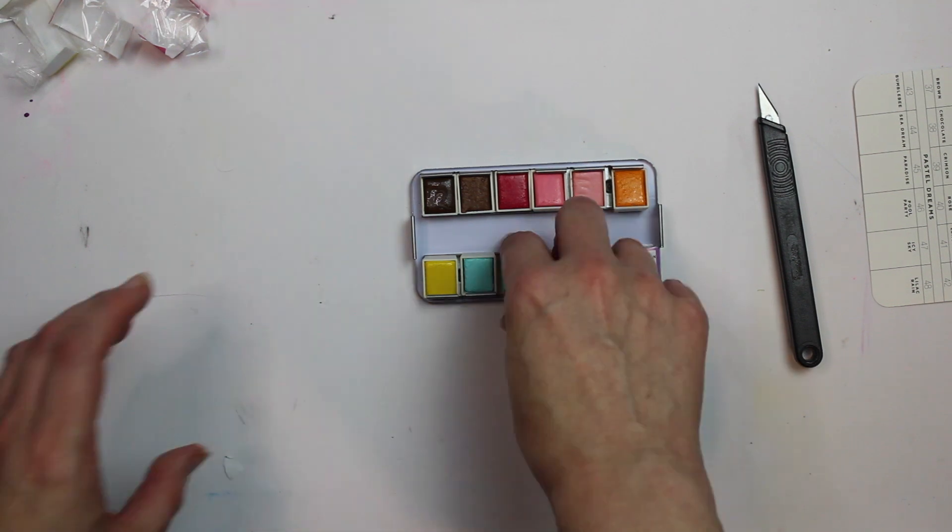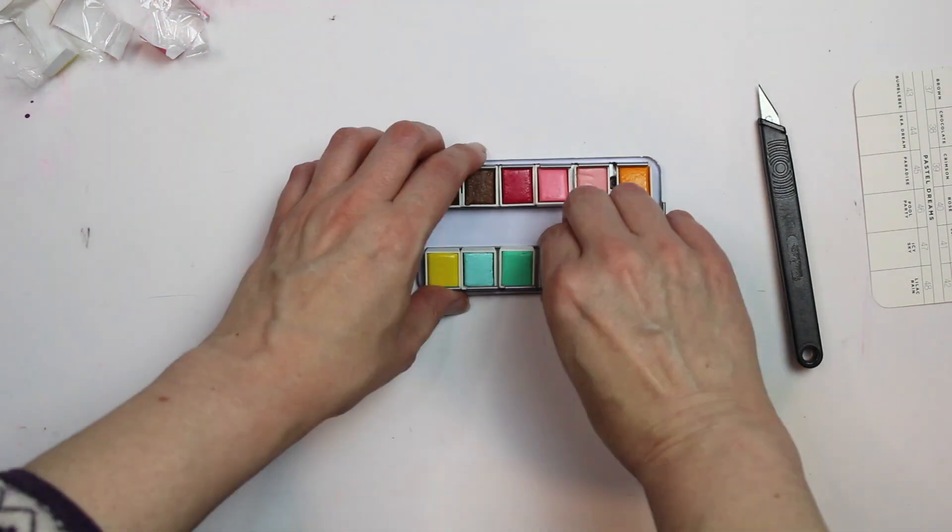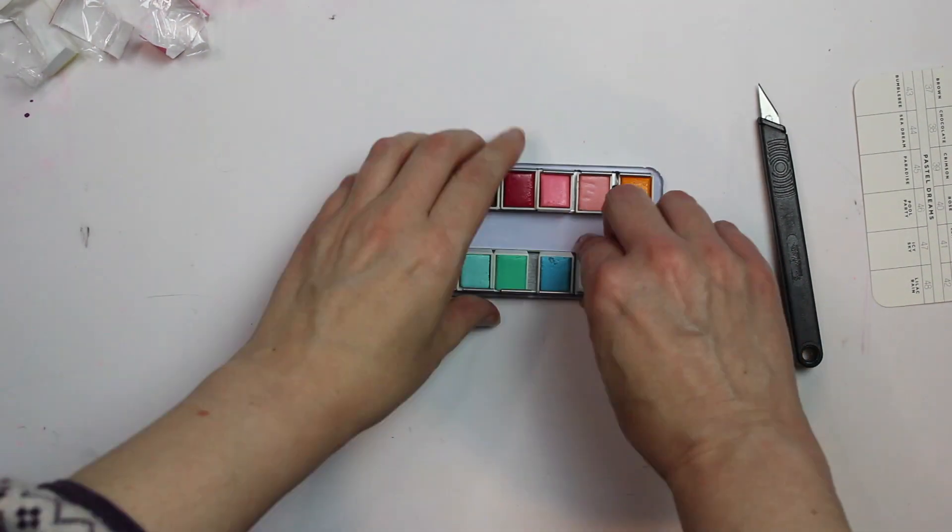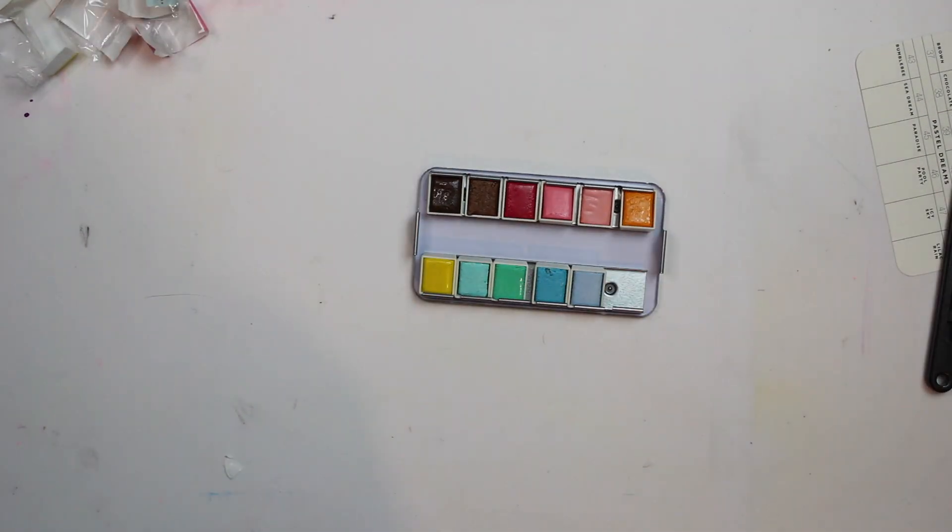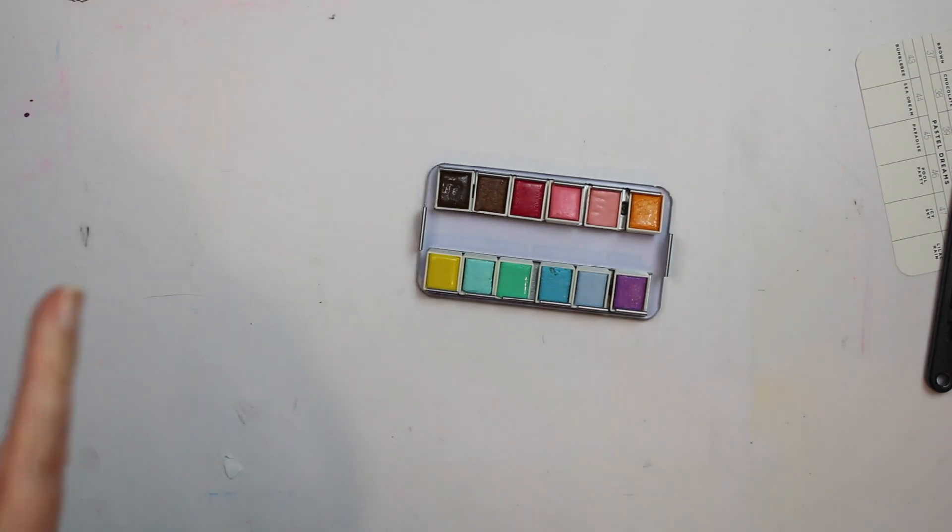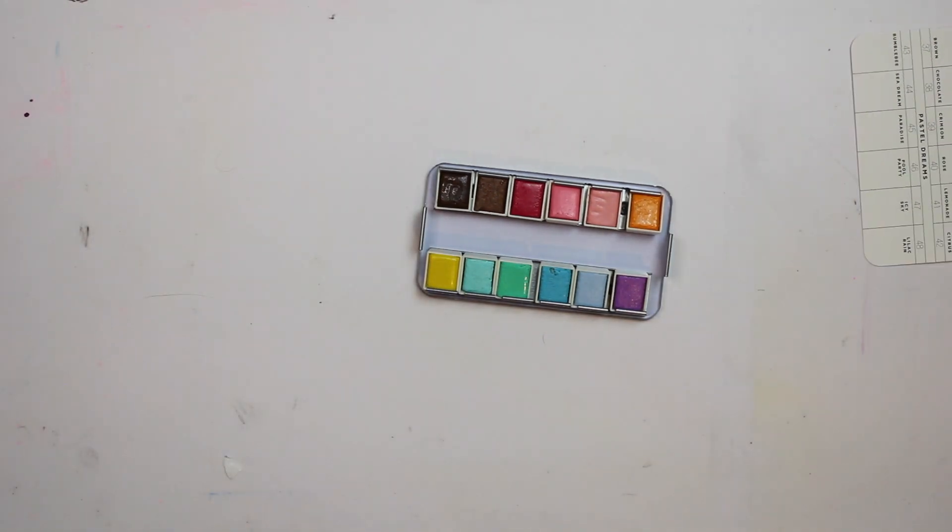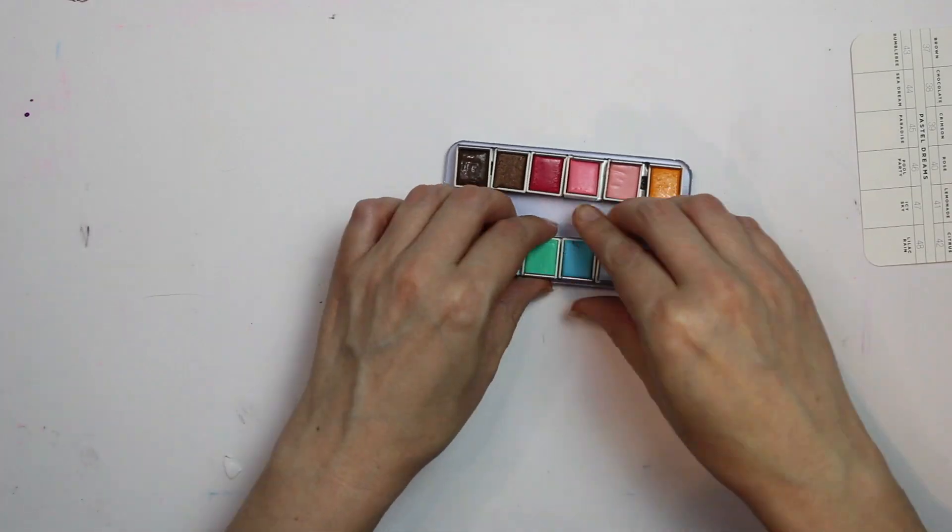What I did was I wrote the number of each pan on the front so that if I run out of any in the future, I'll be able to make sure I've got the right colour. For the blues and pinks it's probably not easy to identify which one's which. So just for me I would do that.